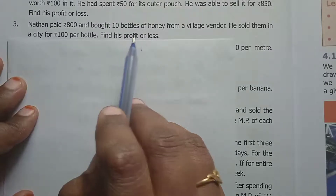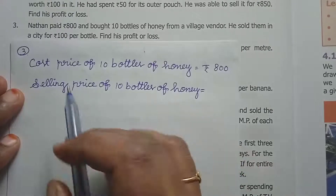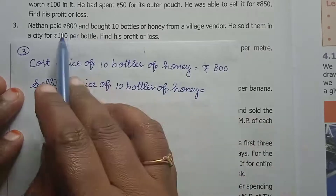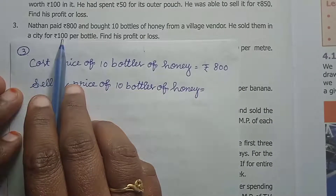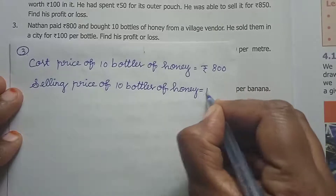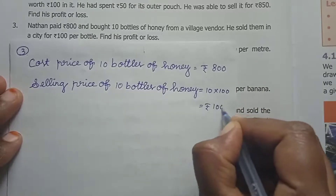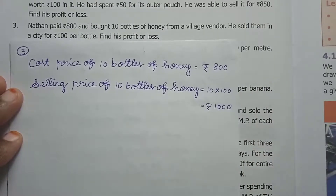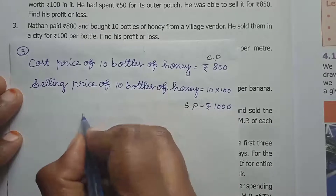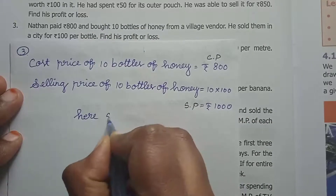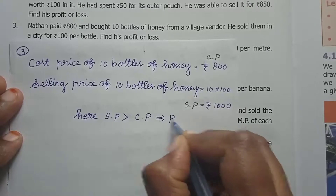The cost price is Rs. 800. The selling price of 10 bottles: one bottle is 100 rupees, so the selling price of 10 bottles is Rs. 1000. The selling price is greater than the cost price.